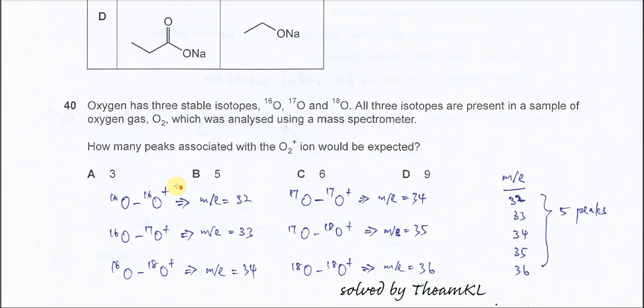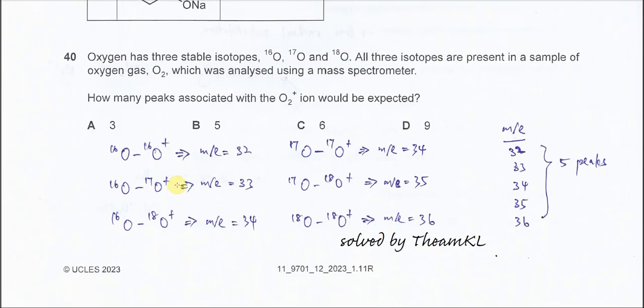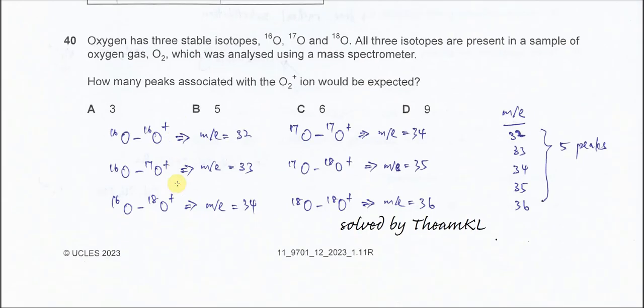Question 40. Oxygen has three stable isotopes: oxygen-16, oxygen-17, and oxygen-18. All three isotopes are present in a sample of oxygen gas O2, which was analyzed using a mass spectrometer. How many peaks associated with the O2+ ion would be expected?